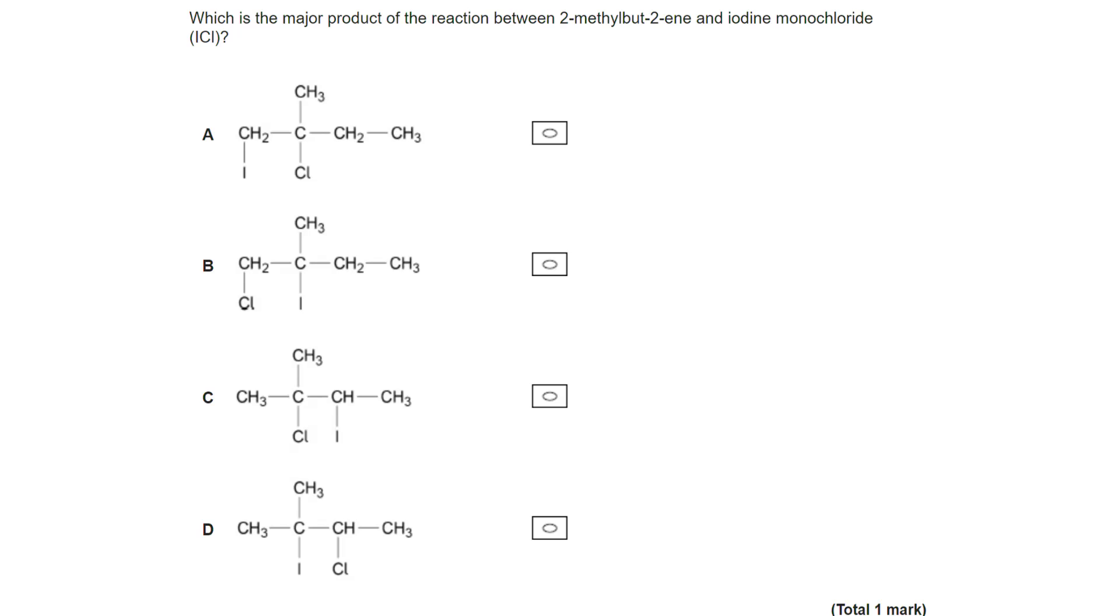We're jumping straight in with quite an unusual one, quite different. There's an extra component to this than you will often get on these questions. We want to know the major product of the reaction between 2-methylbutene and iodine monochloride. It's not something that we're familiar with, but we can work out enough about it to successfully answer this question.